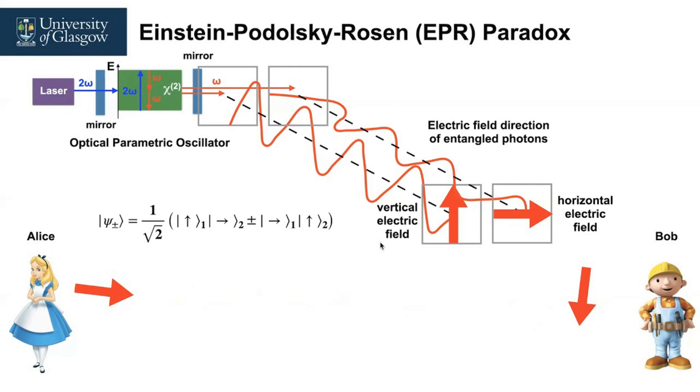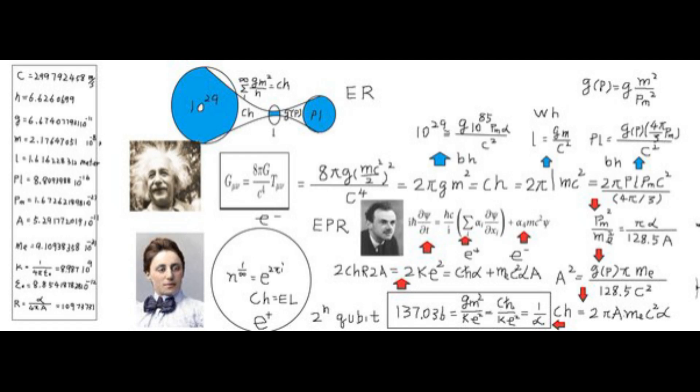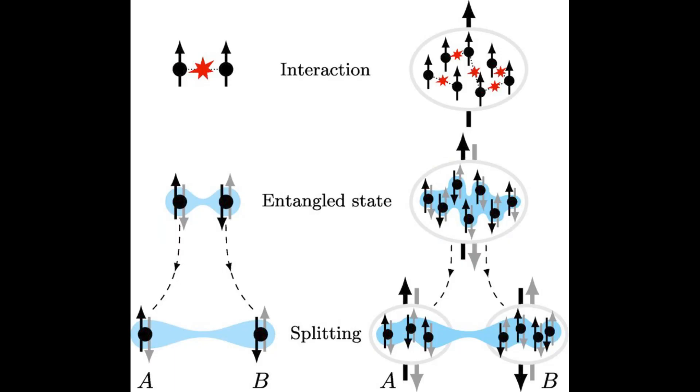Entanglement is a phenomenon in which particles are intertwined, and the state of one instantly affects the state of the other, regardless of the distance between them. This non-local property of quantum entanglement offers significant potential for quantum computing, allowing entangled qubits to perform coordinated operations with unprecedented speed and efficiency. It suggests that if quantum mechanics is complete, two particles that are entangled and separated by large distances can instantly affect each other's state, seemingly violating the principle of local causality.